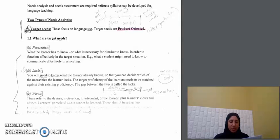Two types of needs analysis. The first one: target needs. This focuses on language, so it's about what the learner, how he or she uses the language. Target needs are product-oriented, so we'll focus on the product whatever the learners produce, such as speaking, writing, whatever.